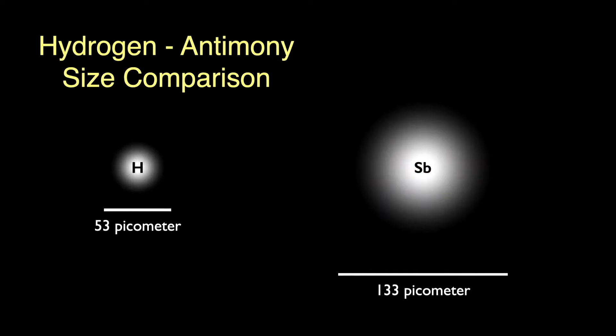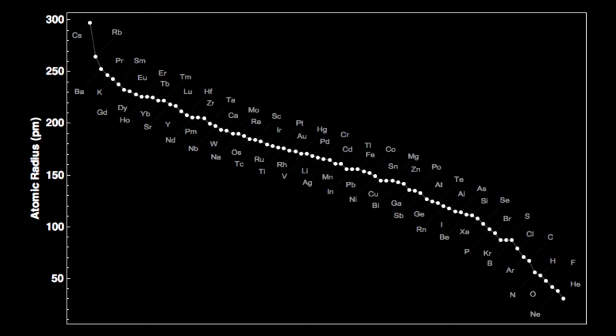If we compare the size of the antimony atom to that of hydrogen, we'd see something like this. The antimony atom is less than three times the size of hydrogen. By the way, a picometer is a trillionth of a meter. Atoms are very small. Here are the sizes of the atoms sorted from largest, cesium on the left, to smallest, helium on the right. Antimony is a mid-sized to smallish atom.